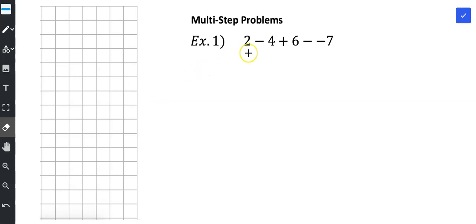Take a look at our first multi-step problem: 2 minus 4 plus 6 minus a negative 7.